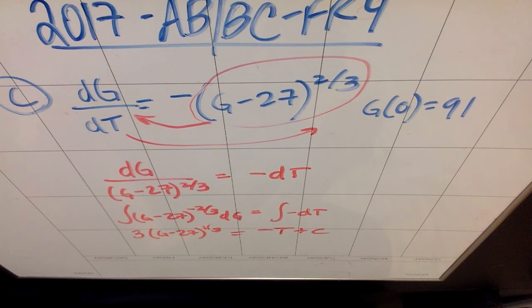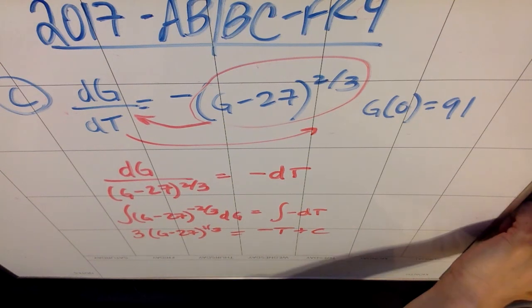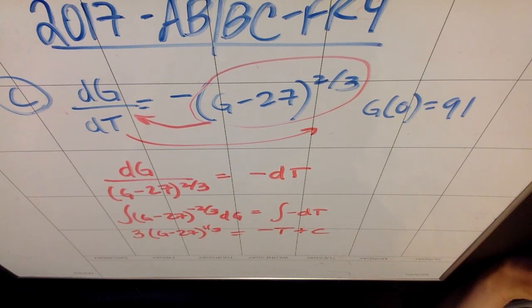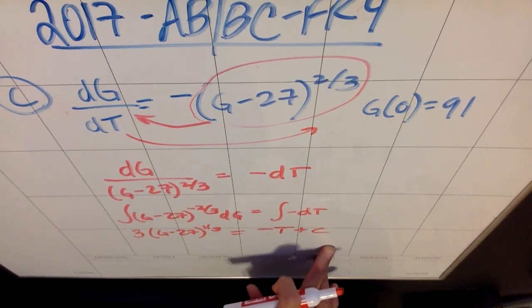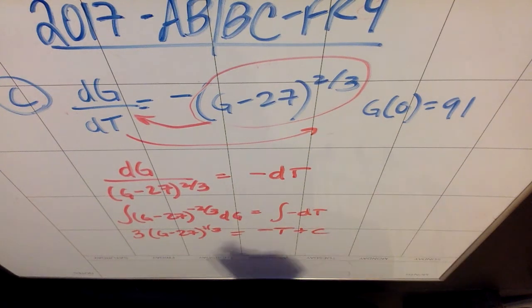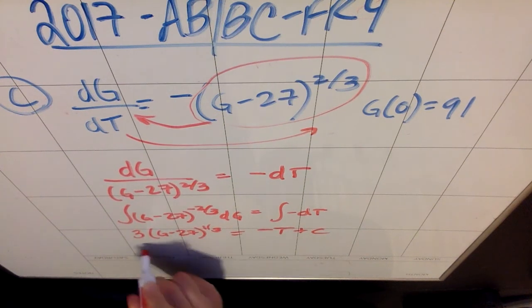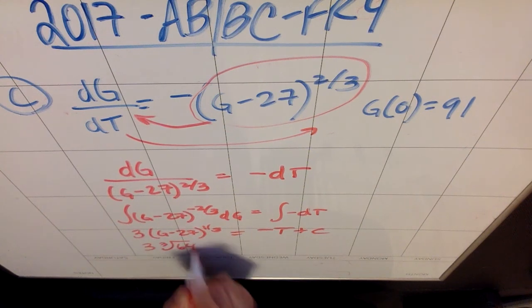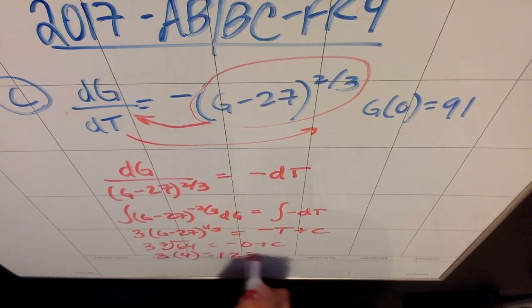They did say find an expression for G of t, so they want you to find G in terms of t. I can either find c now, using the 0, 91, which is fine, or I can find c later, it doesn't matter. So if you choose to plug in 0, 91 now, make sure you plug them in the right places. This is going to end up being 91. So we've already done 91 minus 27, it's 64. So this is 3 times the cube root of 64 equals negative 0 plus c. So I get 3 times 4, which is 12. So my c is 12.